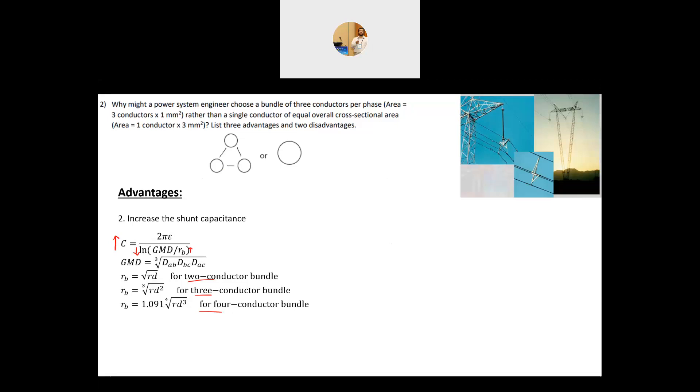Now why increasing the shunt capacitance is an advantage? Because most of the time, the lines are loaded with reactive power. Reactive power, it will lead to basically reduce the power factor. The capacitor, they inject, those stray capacitance inject reactive power in the transmission line and hence will improve the power factor. So this is why it is an important thing.